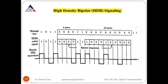For the first one it is high, for the second one it is negative (alternate mark inversion), and for the next one it is positive. For every four consecutive zeros, we add the special sequence 000V, where V can be positive or negative polarity. If we take V as one with negative polarity, the pattern continues with alternating mark inversion.